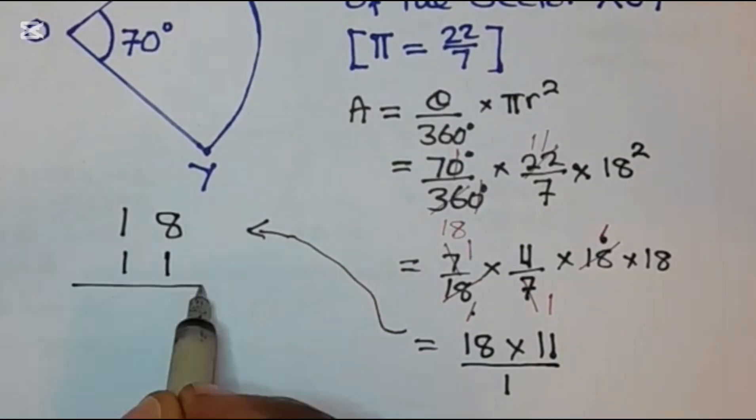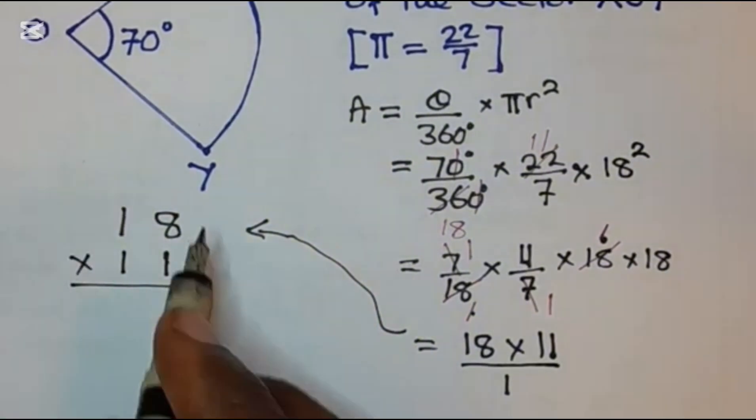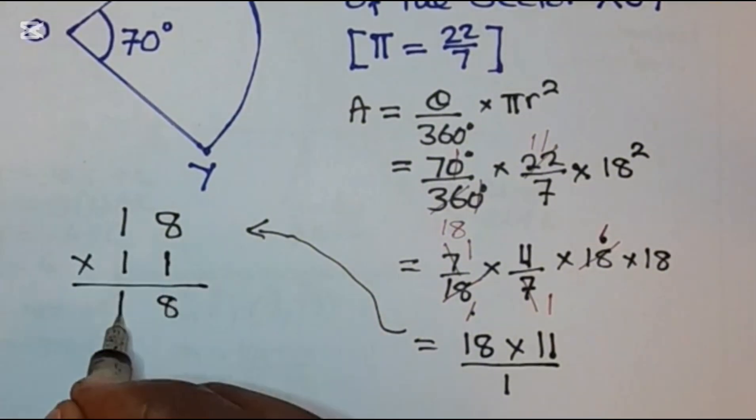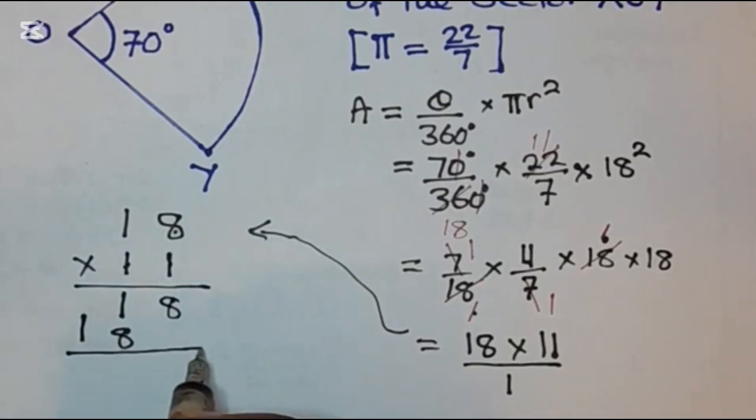18 times 11. So 1 times 8 is 8, 1 times 1 is 1. 1 times 8 is 8, 1 times 1 is 1. Then at this stage you are adding.